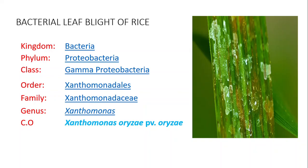What is the causal organism and its order and family of bacterial leaf blight of rice? Xanthomonas oryzae pv. oryzae belongs to order Xanthomonadales and family Xanthomonadaceae.